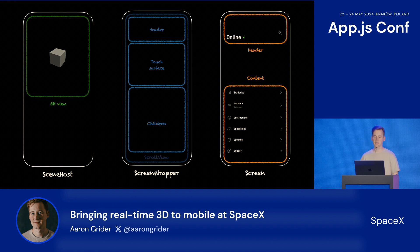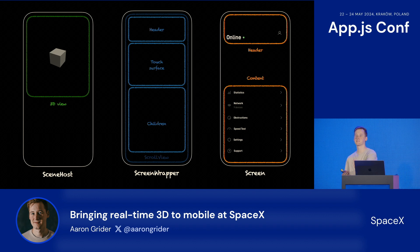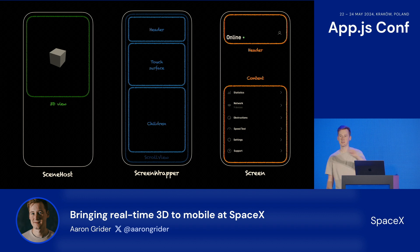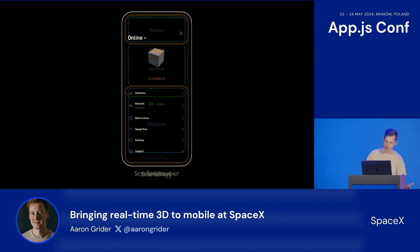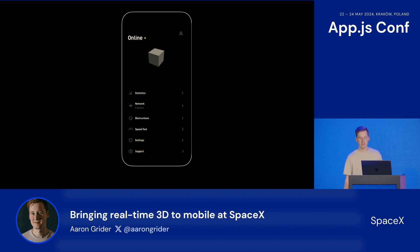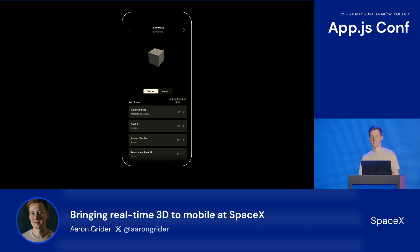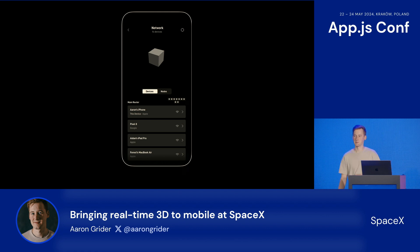We also created a wrapper component that we can reuse for any screen that shows the 3D view behind it. The wrapper component deals with the following things: since the screen content inside the scroll view needs to be offset to show the 3D scene underneath, it spaces the content down. When a user scrolls, we also need to dim the 3D scene behind it, so it handles that with a scroll gesture handler. Finally, we include a touch surface — because the screen is on top of everything and the 3D view is in the back of the app, we need a way of plumbing touch events through to the 3D scene. Combined, we now have a 3D view behind our scene content, and when we navigate to a new screen, it works.